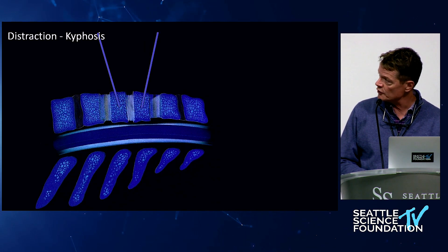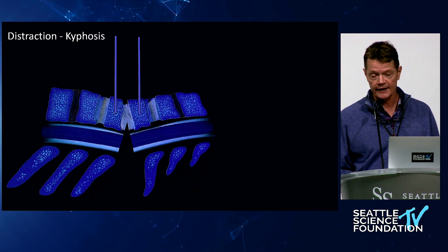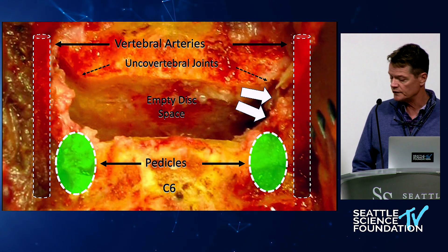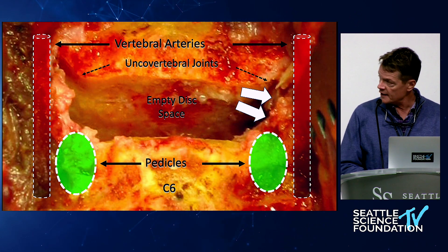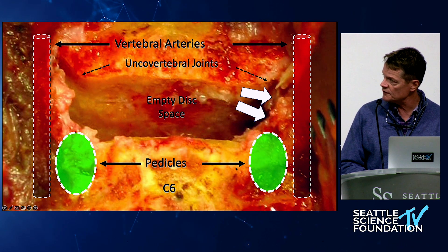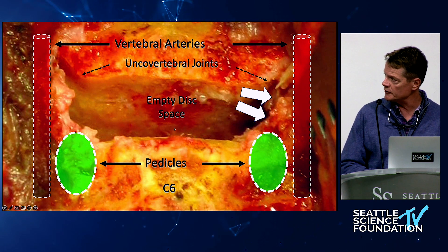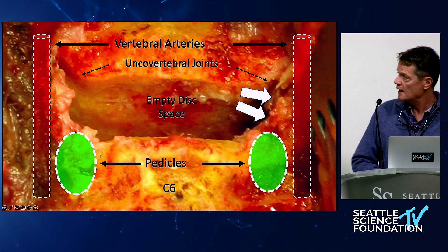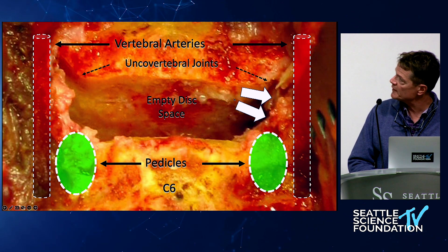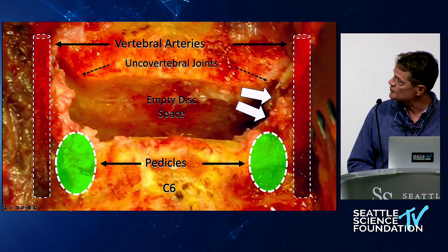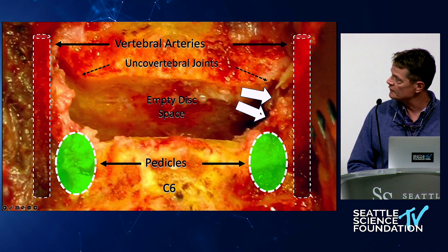Decompression is one of the most common indications for a 360 construct. The distance from pedicle to pedicle in the average Caucasian male is 18 to 22 millimeters — yet I've seen 15 mm decompressions repeatedly. You really need to reach the pedicle on both sides with a blunt hook. Through the disc space, the uncovertebral joints protect you from the vertebral artery as long as bone remains on the outside — it's when you take down that uncovertebral bone that you enter vertebral artery territory.